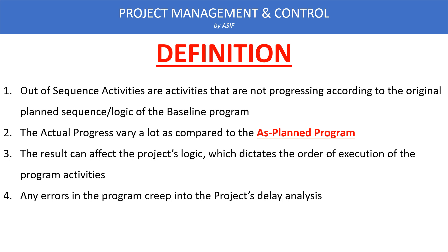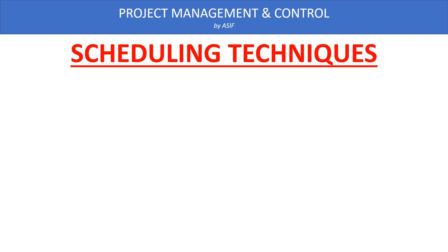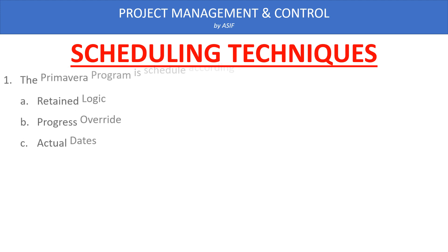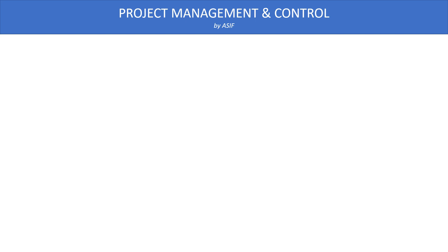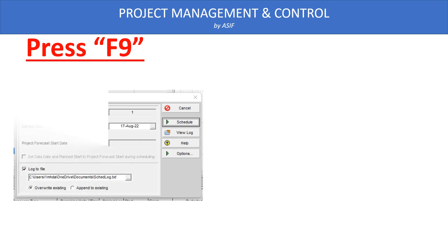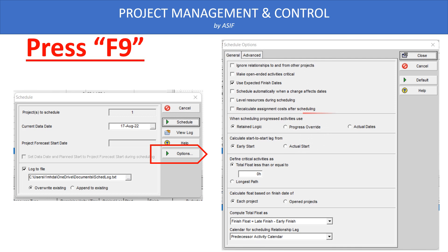It is very important to remove auto-sequence activities from the updated program. Primavera P6 offers three types of techniques to update a program: Progress Retain Logic, Progress Override, and Actual Dates. To access these techniques, press F9 — the scheduling dialog box will open. In that dialog box, click the Options button, then go to the General tab, where you will see these three techniques listed. Normally, consultants and clients are recommended to use the Retain Logic technique.